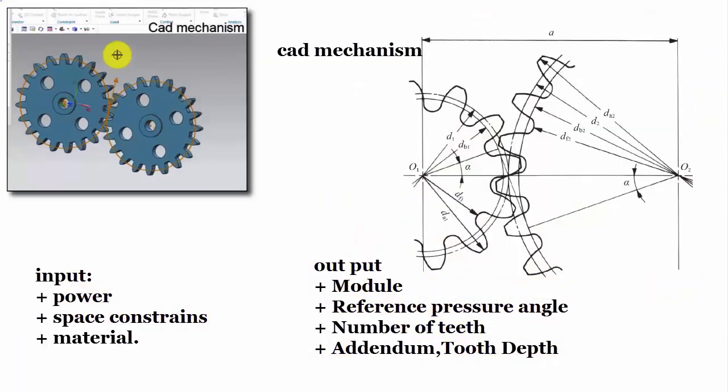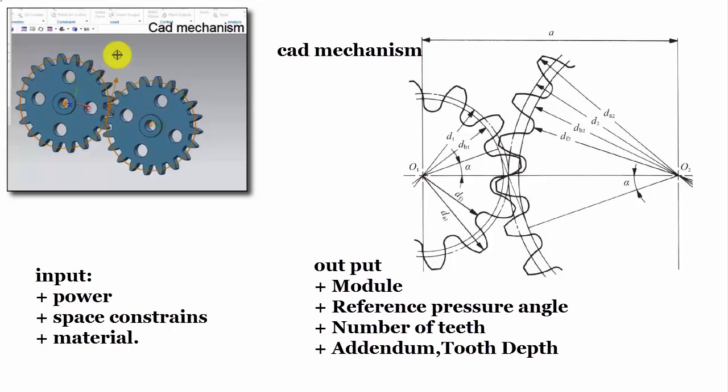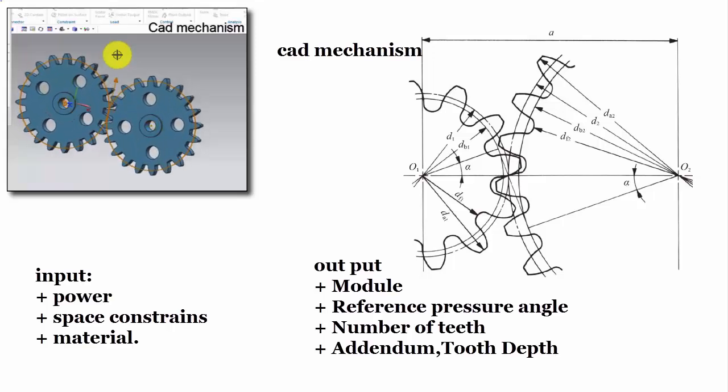Spur gears are regularly used for speed reduction or increase, torque multiplication, resolution and accuracy enhancement for positioning systems.